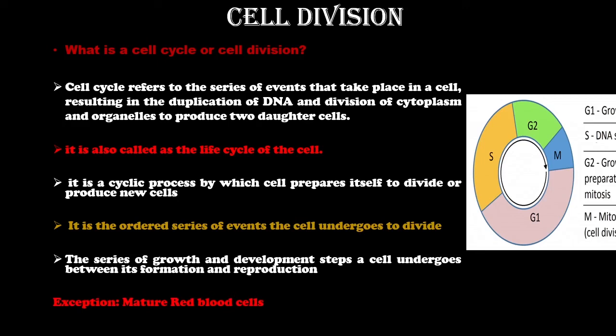There are exceptions to cell division. Mature red blood cells do not divide — because their nucleus is ejected, and without a nucleus, the genetic material is not present. Since genetic material cannot be duplicated and sent to daughter cells, mature red blood cells do not undergo cell division. This is the exception where cell division doesn't take place.